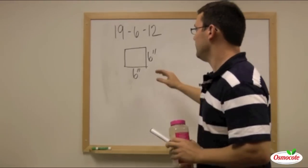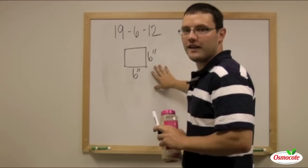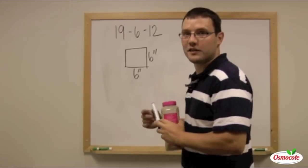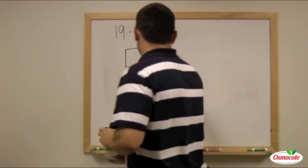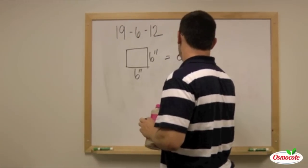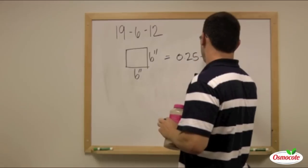So the first thing that we need to determine is how many acres is in a 6-inch square pot. So this is equal to 0.25 square feet.